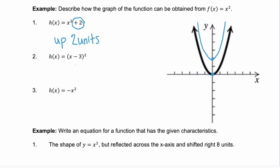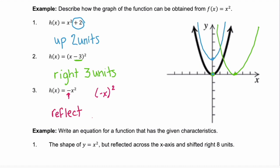Look at number 2. Here, our mother function has negative 3 happening inside. Because it's inside, we know we're going left or right — this is actually right 3 units. So take that vertex and move 3 units to the right to get the new function. And lastly, we have negative x squared. Notice that the negative is on the outside — this is a reflection across the x-axis. The vertex stays the same and the graph just reflects.